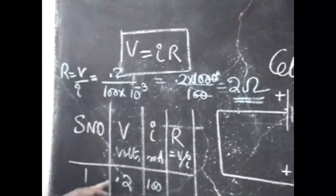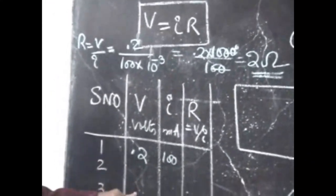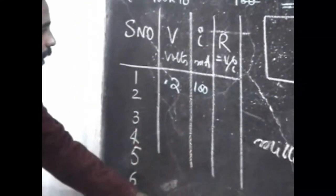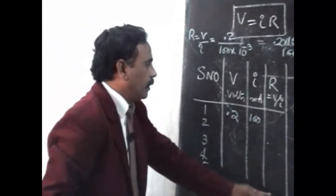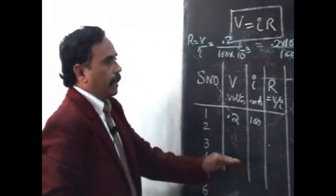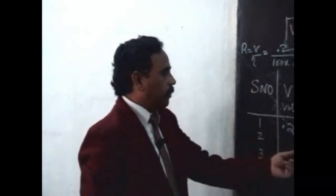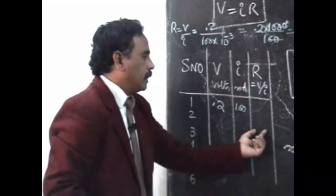So like this, for 0.2, then 0.4, 0.6, like that, you have to take the readings and continuously you have to calculate the values of resistance. And finally, we observe that the resistance value is always same.